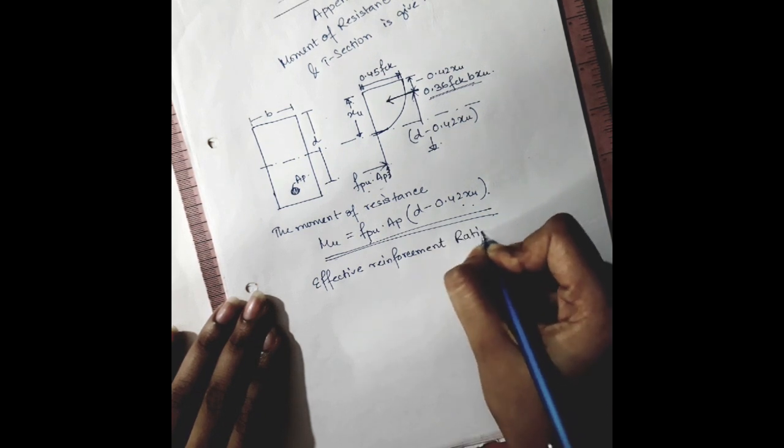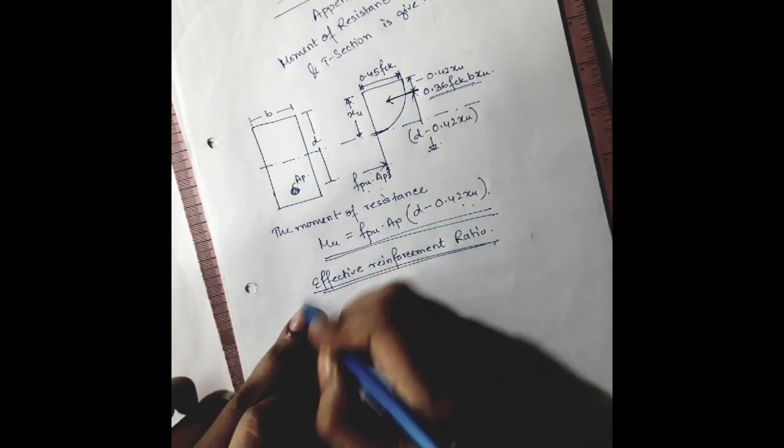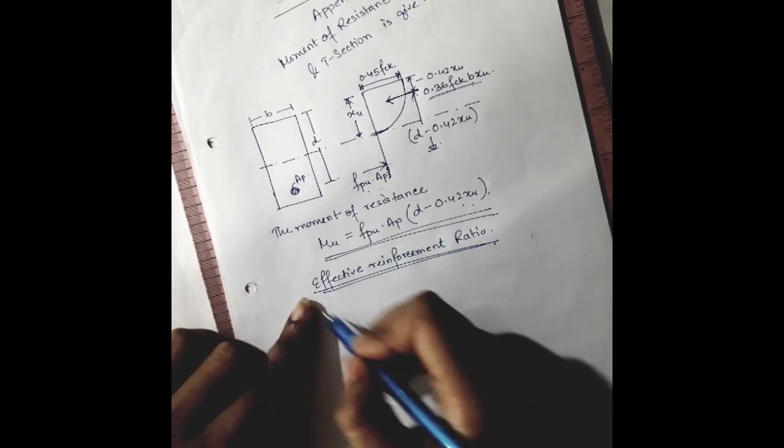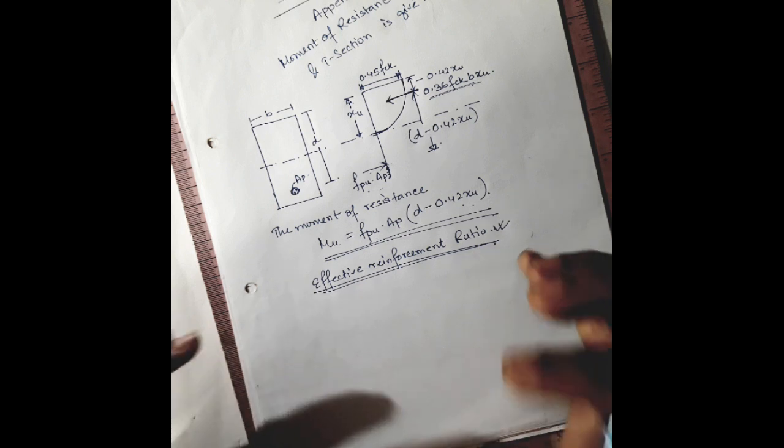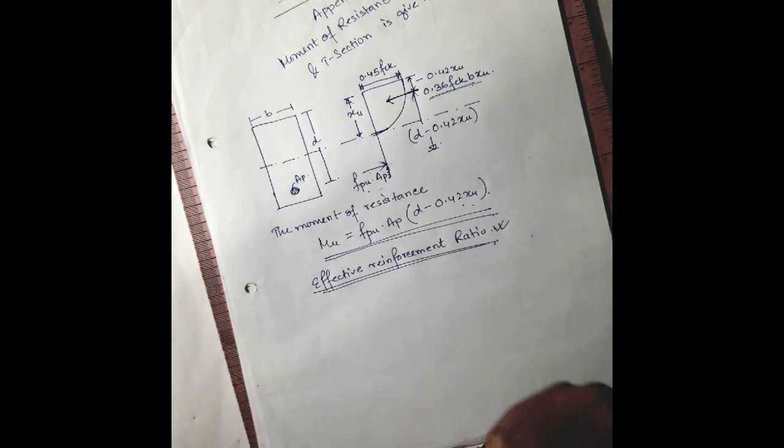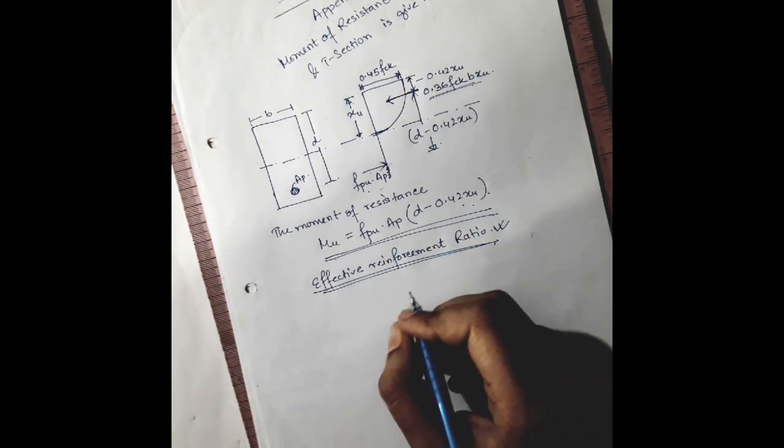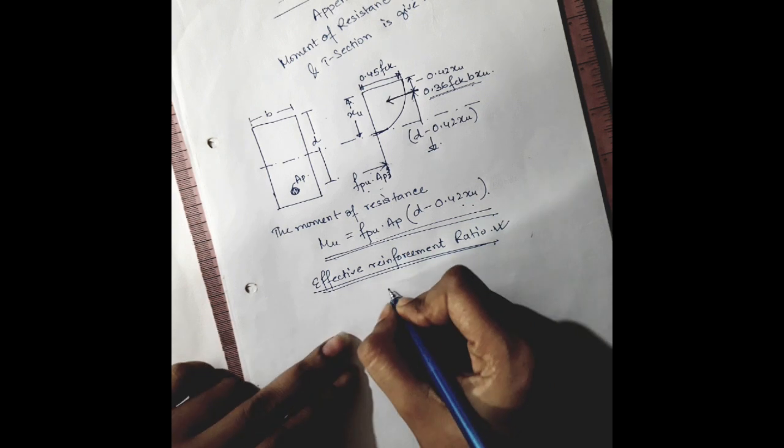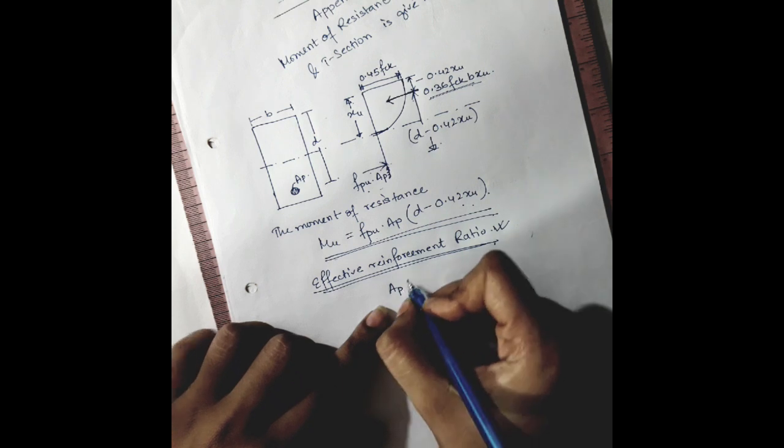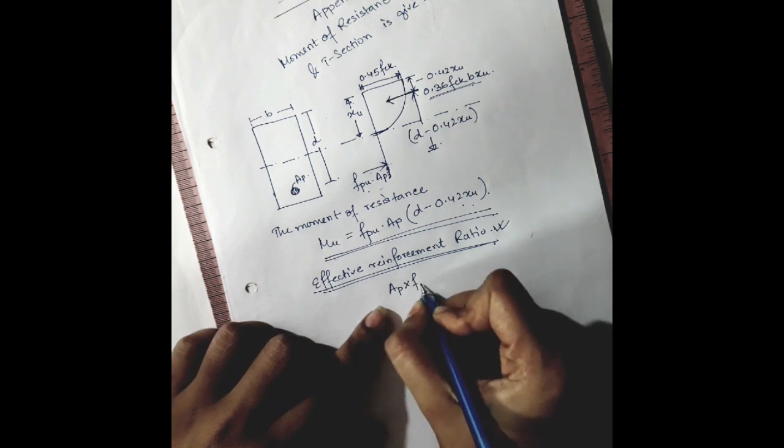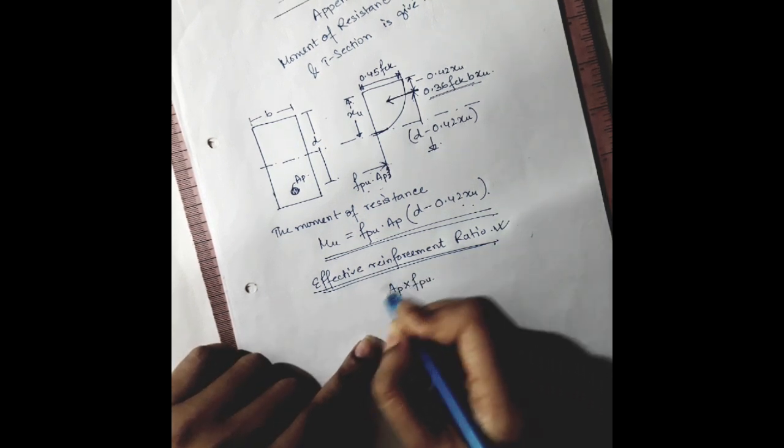We will get to know this terminology while doing the problem. By evaluating this ratio, we will get certain values from the table in IS 1343. The effective reinforcement ratio can be described as area of the pre-stressing tendon times fpu, which is the tensile stress developed in tendons, divided by the area of the concrete block, which is b times D, times the characteristic compressive strength of the concrete.